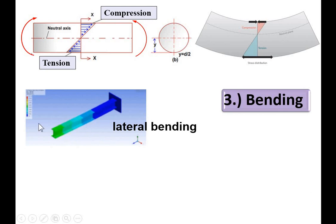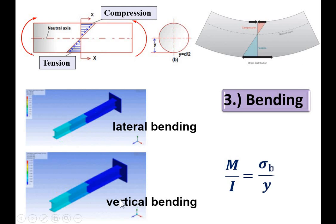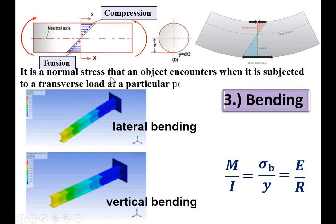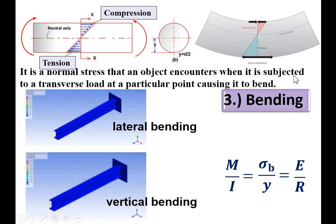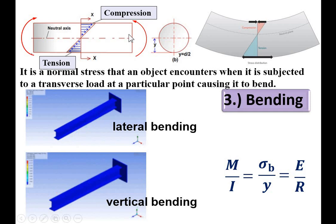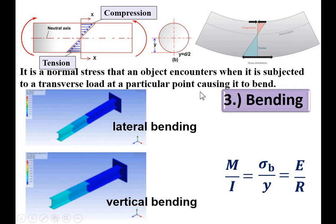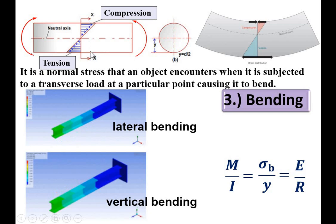This is actually a cantilever beam — it can bend in the lateral or vertical direction. This is the fundamental equation of the bending moment. Definition: bending stress is a normal stress that an object encounters when it is subjected to a transverse load — that is, a load perpendicular to the cross-section — at a particular point, causing it to bend. Any load in the transverse direction causes bending stress.